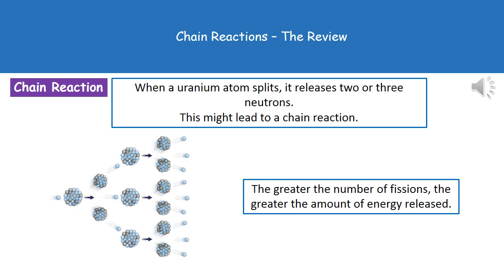Welcome to our review on chain reactions. If you think back to what we've already looked at when we looked at nuclear power, we said that as a uranium atom splits, it's going to release two or three neutrons. This process can very easily lead to what's called a chain reaction.